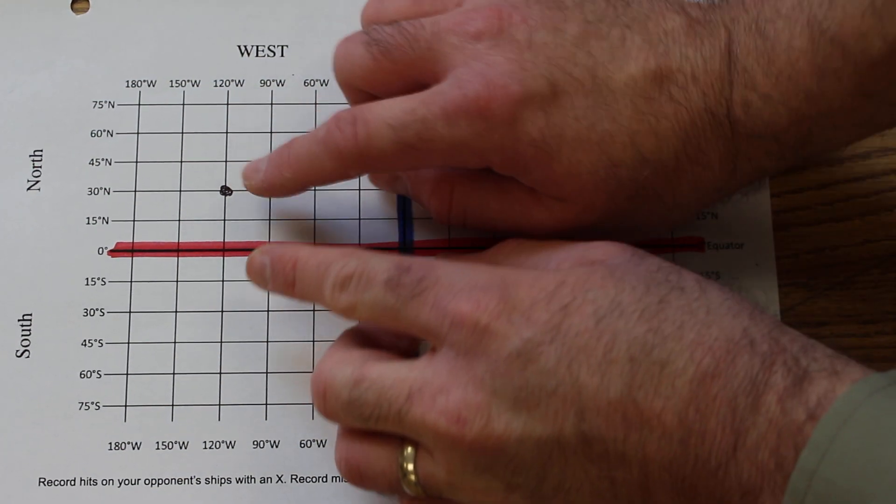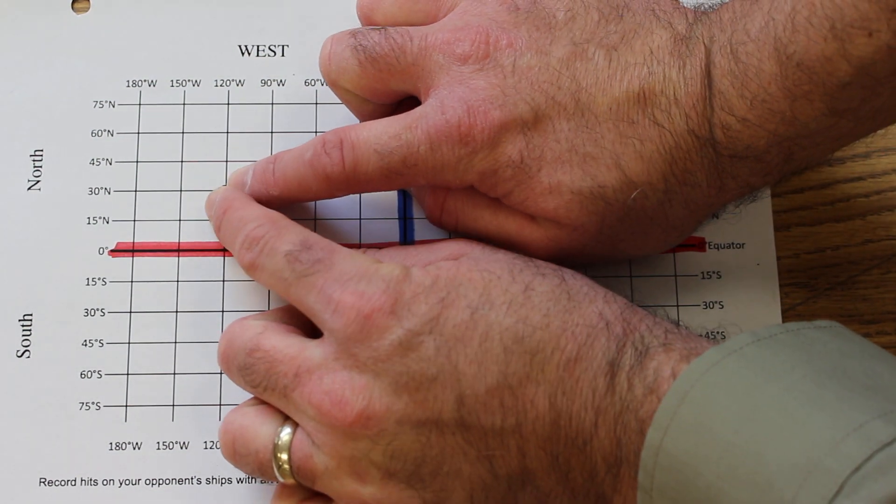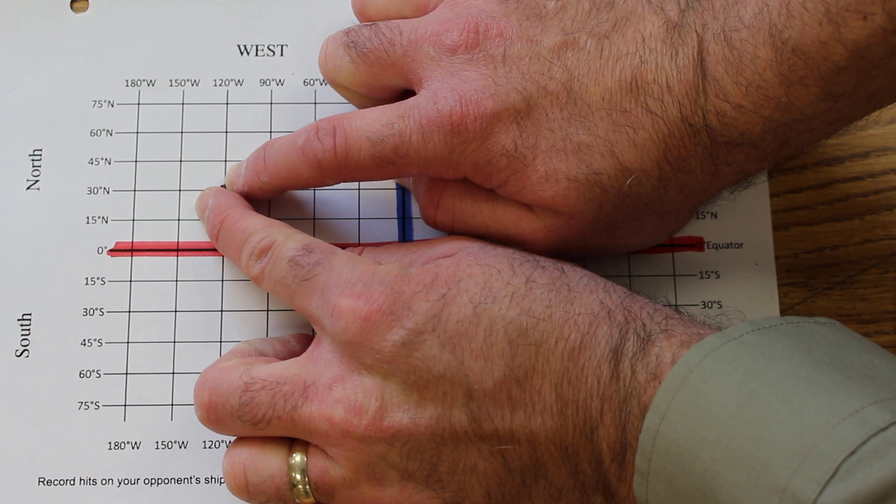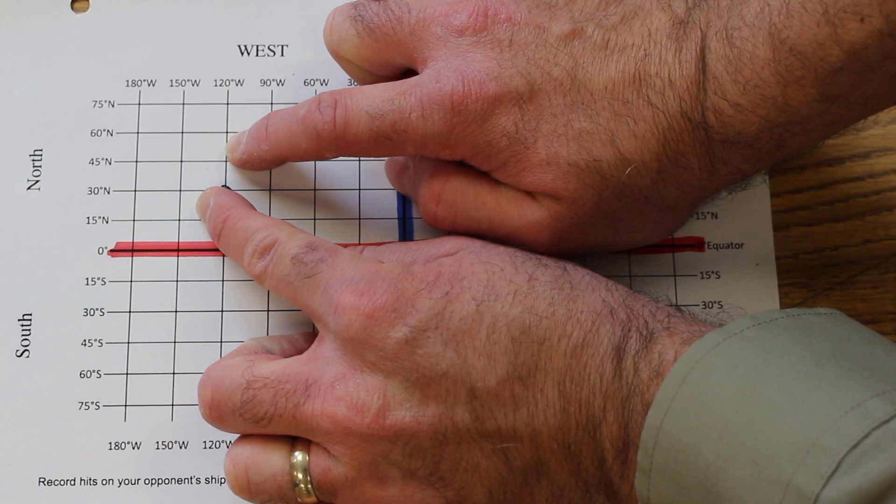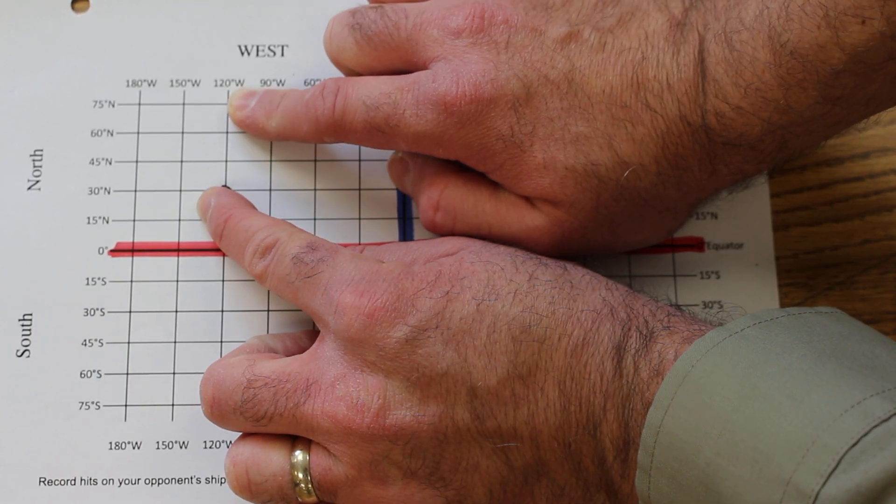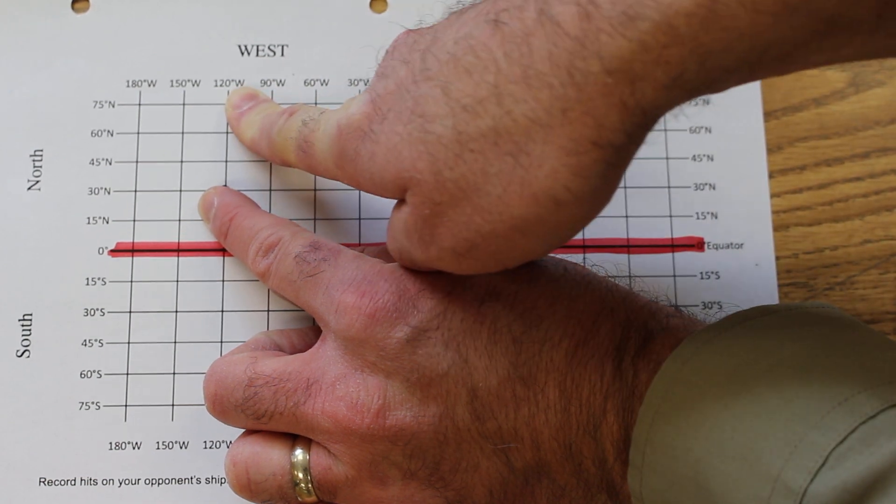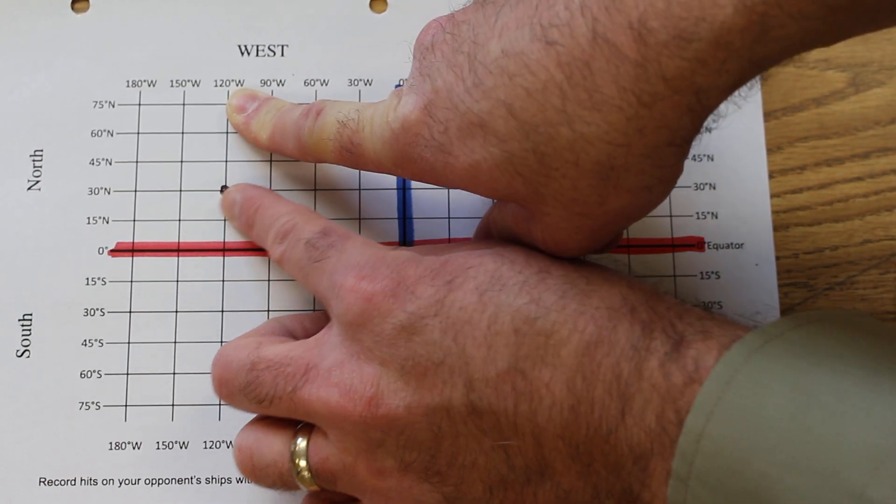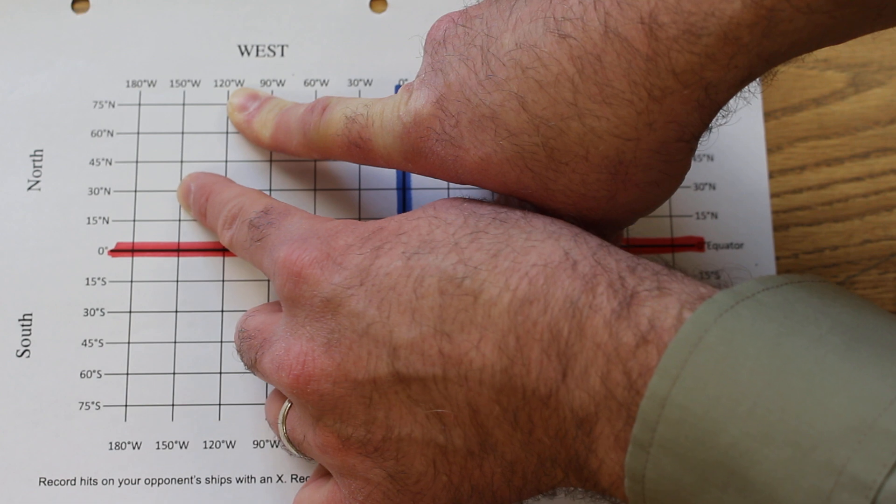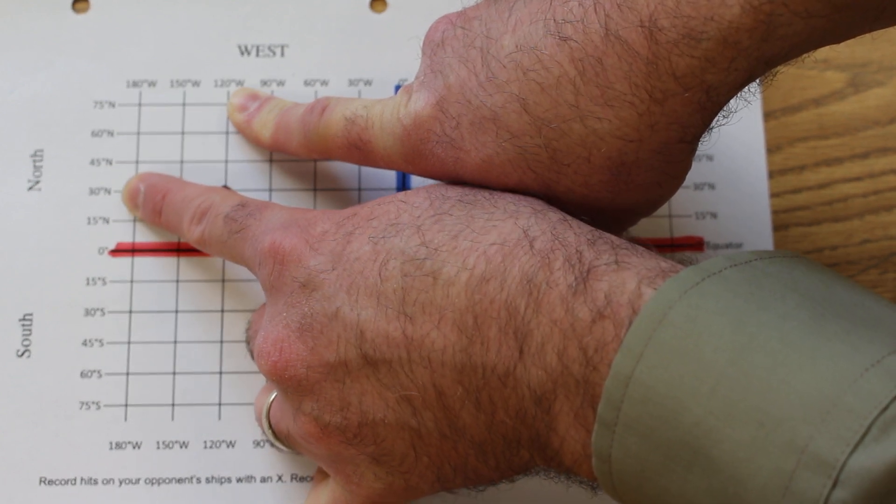What I do is I put my fingers on the point and I trace the longitude line up to its label, 120 degrees west, and I trace the latitude line laterally to its label, 30 degrees north.